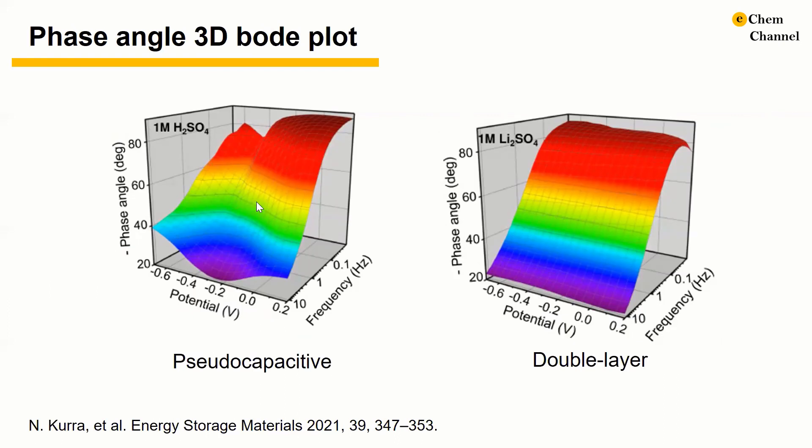The phase angle 3D Bode plot can be deployed to illustrate visually the correlation between phase angle versus frequency and the potential. For example, in the sulfuric acid electrolyte, a dip in the phase angle map was observed at a potential of negative 0.33V versus silver-silver chloride in the MXene. This indicates that the kinetics of charge transfer reactions is slower compared to the double layer process.